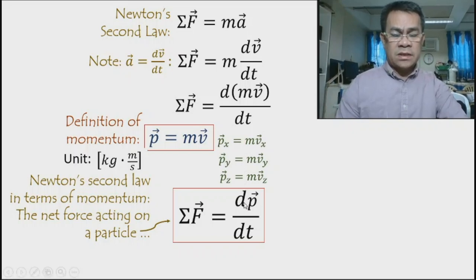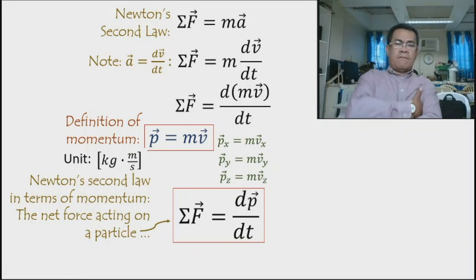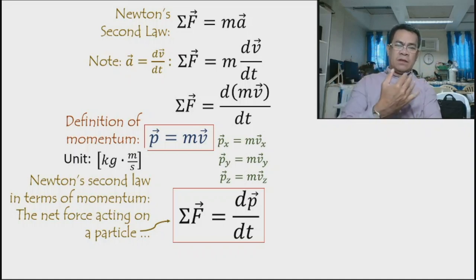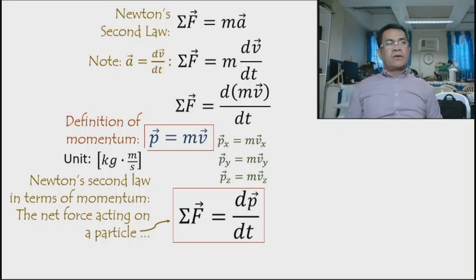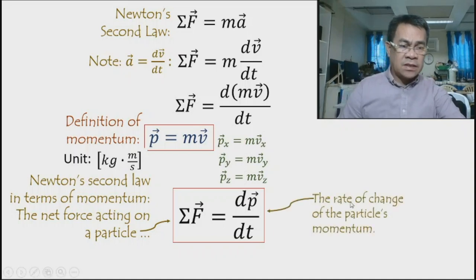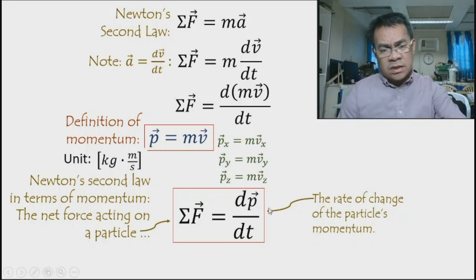The net external force on a particle is the change in momentum per time interval. If a particle goes from state one to state two, we have initial and final momentum. When one particle collides with another, we have before, during, and after collision. During collision, the net force is the change in momentum per time interval.